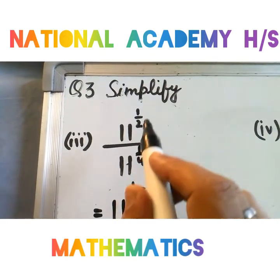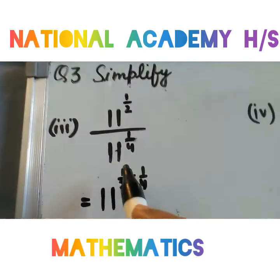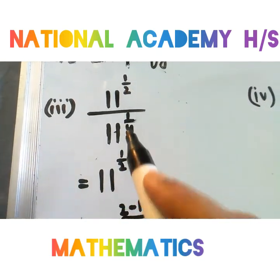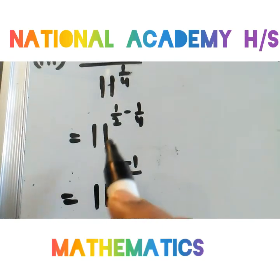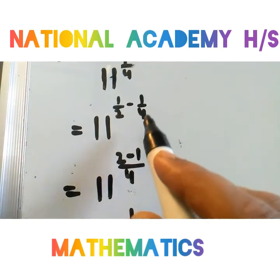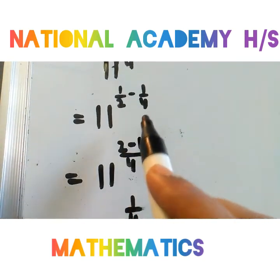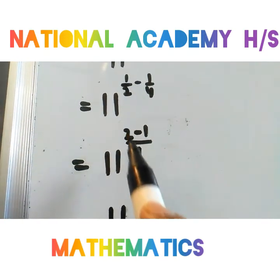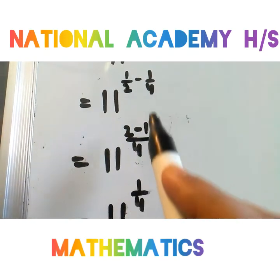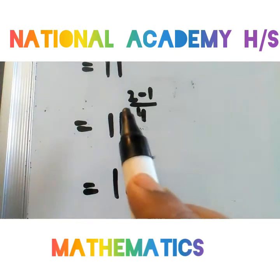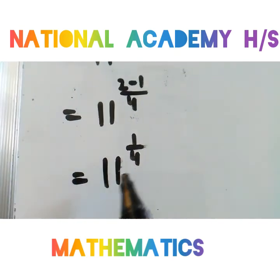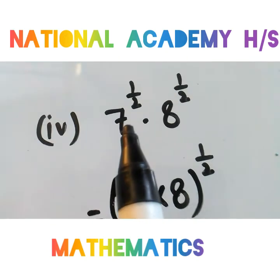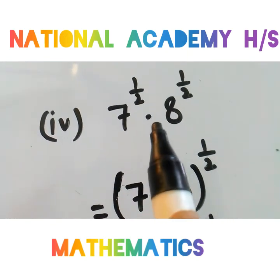Third part है 11 raise to power 1 by 2 upon 11 raise to power 1 by 4। Bases same हैं, divide में powers minus होती हैं: 11 की power 1 by 2 minus 1 by 4। LCM of 2 and 4 is 4 — 4÷2=2, 2×2=4; 4÷4=1, 1×1=1 — so 4 minus 1 = 3 by 4। Wait — 2 minus 1 = 1, so answer है 11 raise to power 1 by 4।